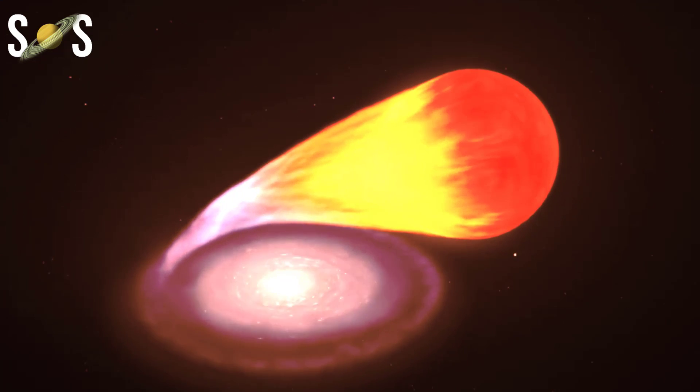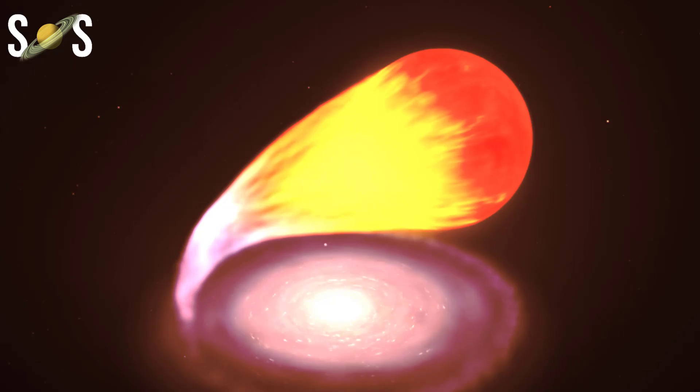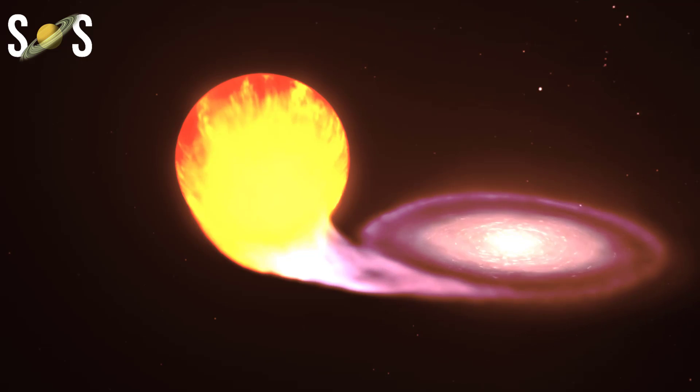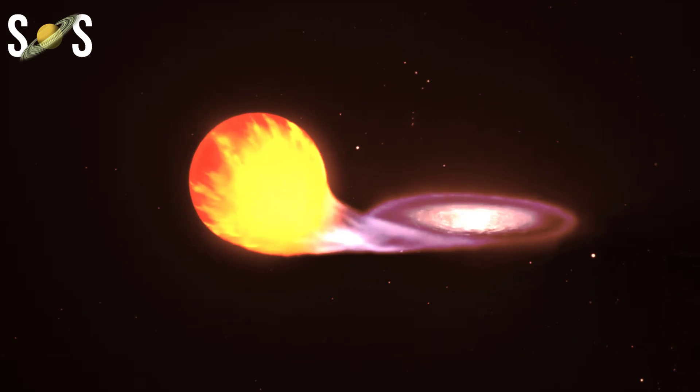One popular red supergiant star is Betelgeuse, which has captured interest due to its irregular dimming. While it was predicted that Betelgeuse may go supernova, it's still around.